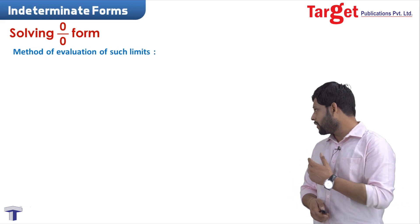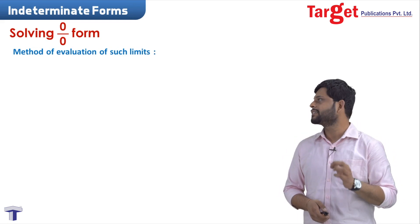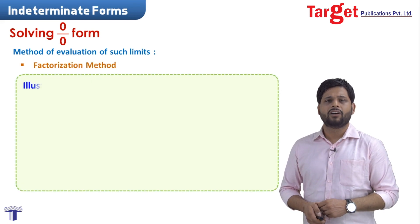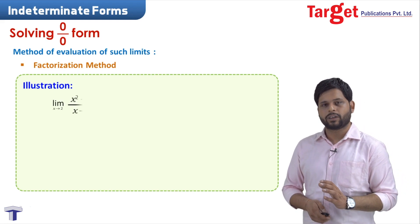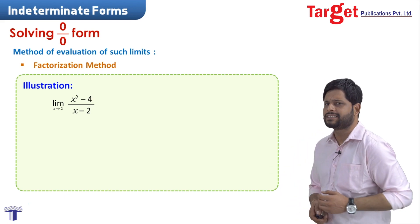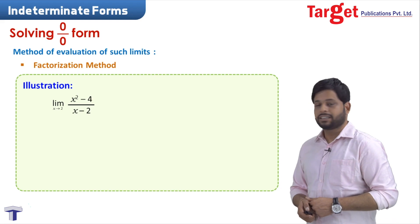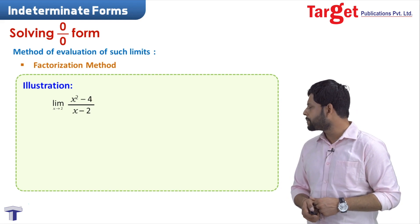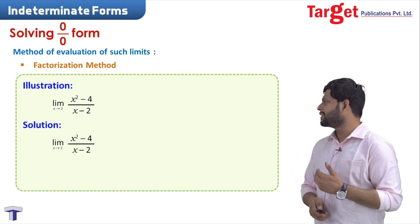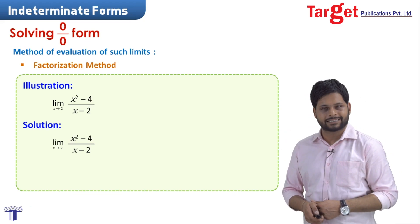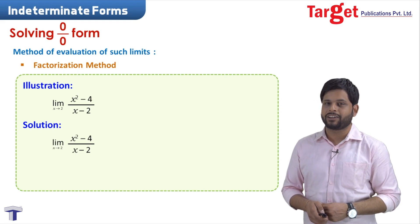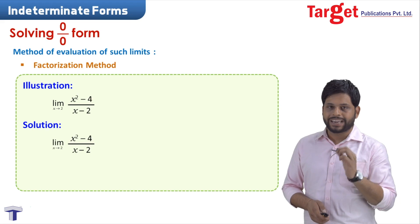For solving 0/0 form, the first method of evaluation is the factorization method. Let us take an illustration: limit x approaching 2 of x squared minus 4 upon x minus 2. If we substitute x equal to 2, we get 2 squared minus 4 upon 2 minus 2, which is 4 minus 4 upon 2 minus 2 — that is 0 upon 0, the 0/0 form.